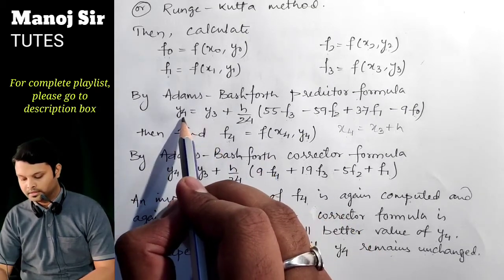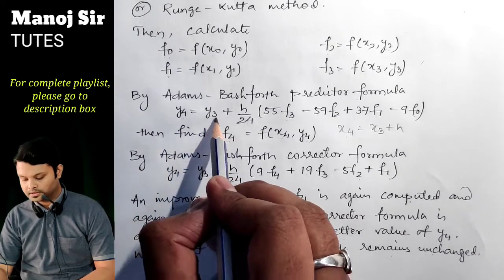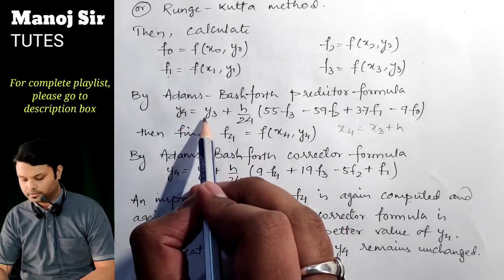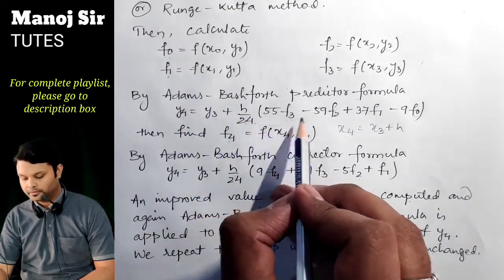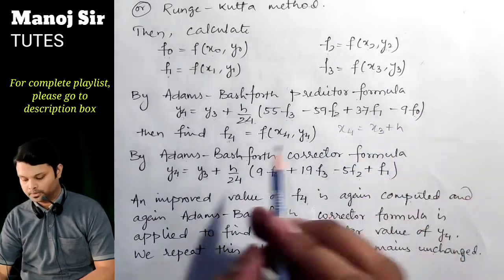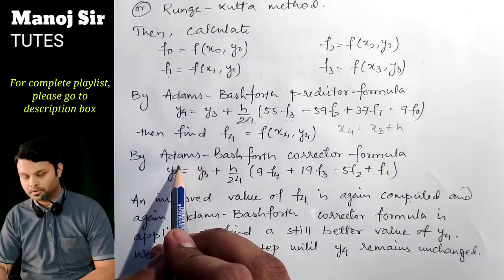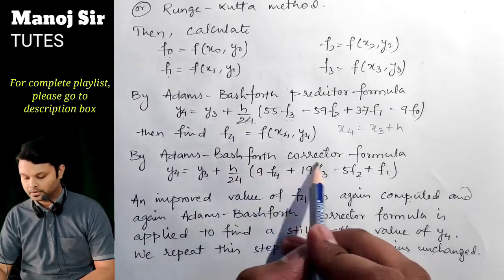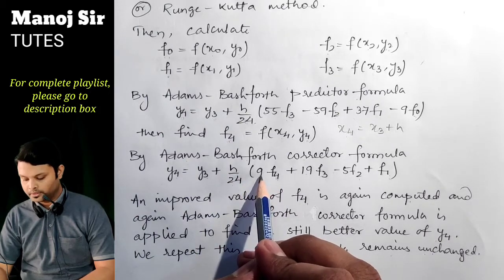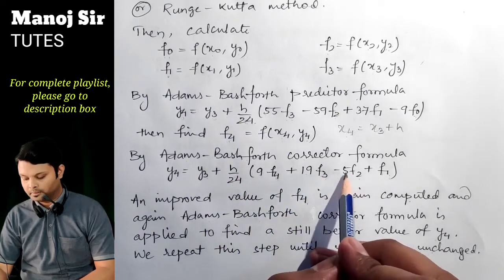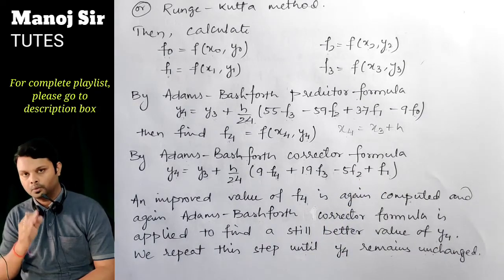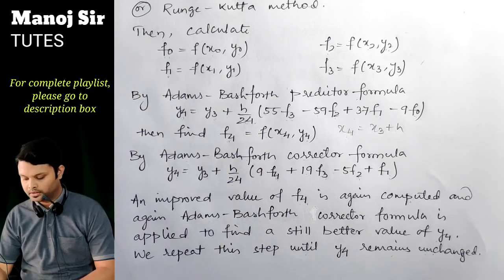If you want to find y₅, simply increment the subscripts by one. The predictor becomes: y₅ = y₄ + (h/24)(55f₄ − 59f₃ + 37f₂ − 9f₁). The corrector becomes: y₅ = y₄ + (h/24)(9f₅ + 19f₄ − 5f₃ + f₂). In the same way, you can find y₆, y₇, and so on.